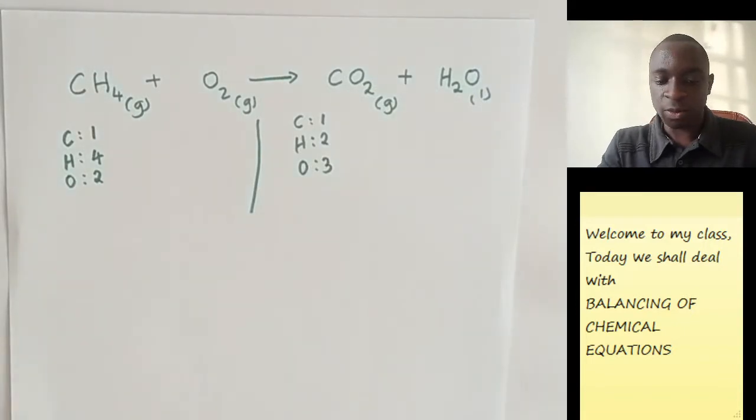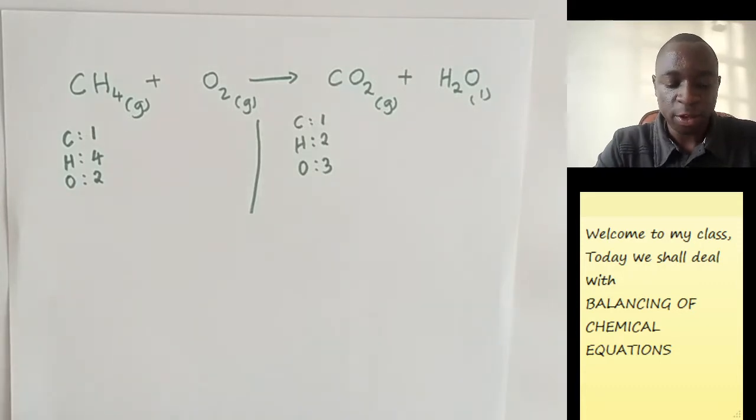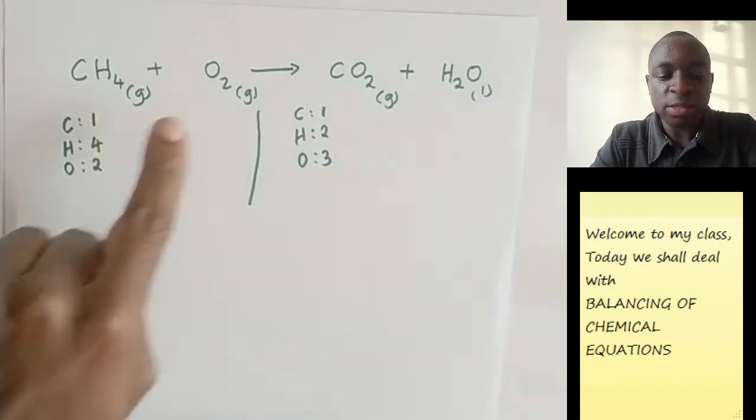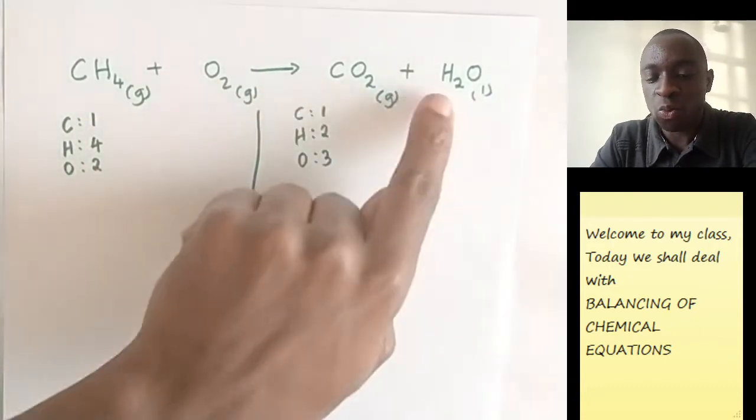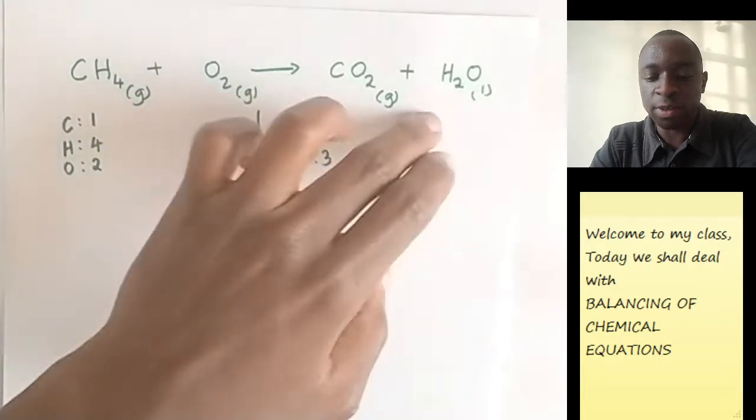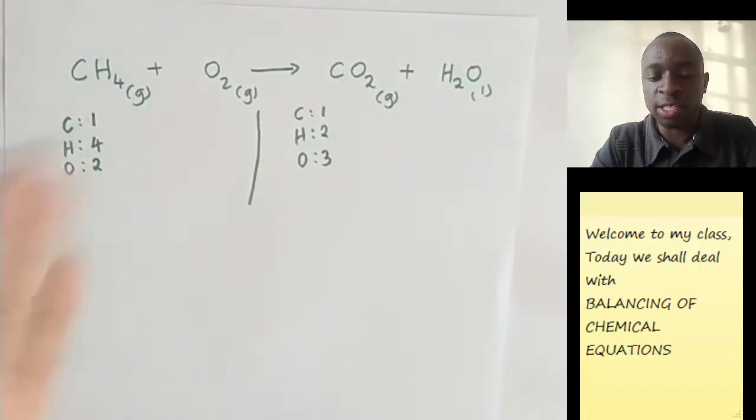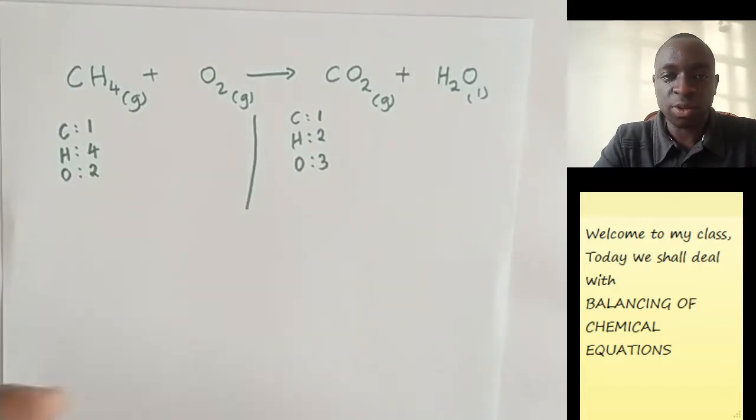Now, as you can see in this equation, already you can notice that the numbers are not adding up. They're not equal on both sides. So for us to make them equal on both sides, we need to add numbers before each of these compounds, one or more of them. You could add numbers to each of them. You could add numbers to just one, and it balances. It all depends with the question.